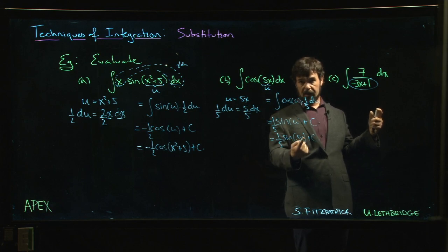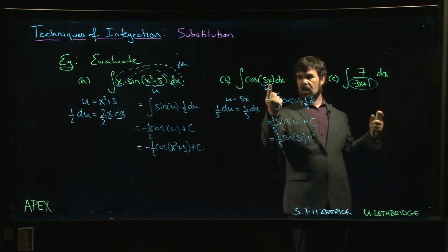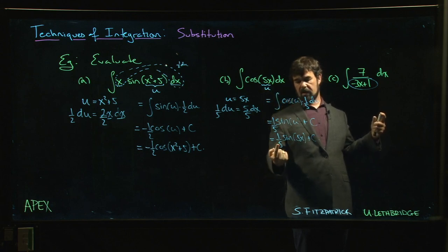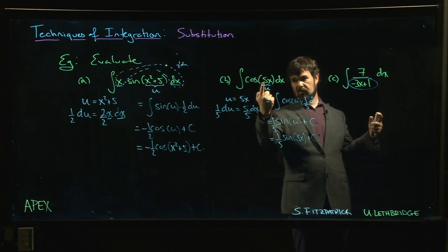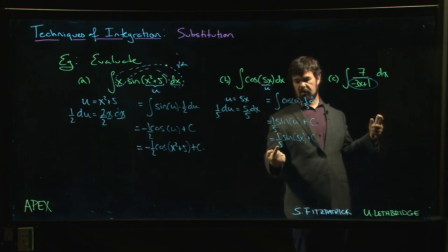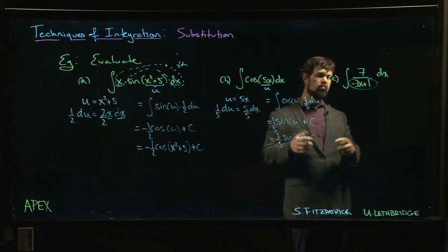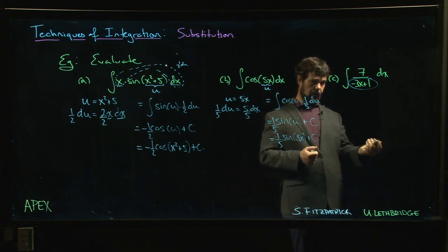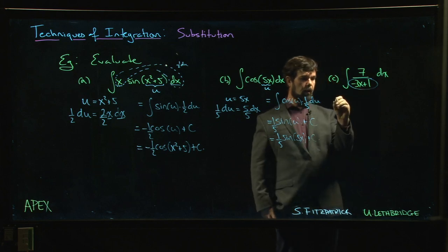Anytime you've got a linear function—multiple of x possibly plus a constant—we just have to divide by that multiple of x, whatever the multiplier is. Divide by the multiplier, plug it in. It's pretty straightforward, but let's break it down in steps.